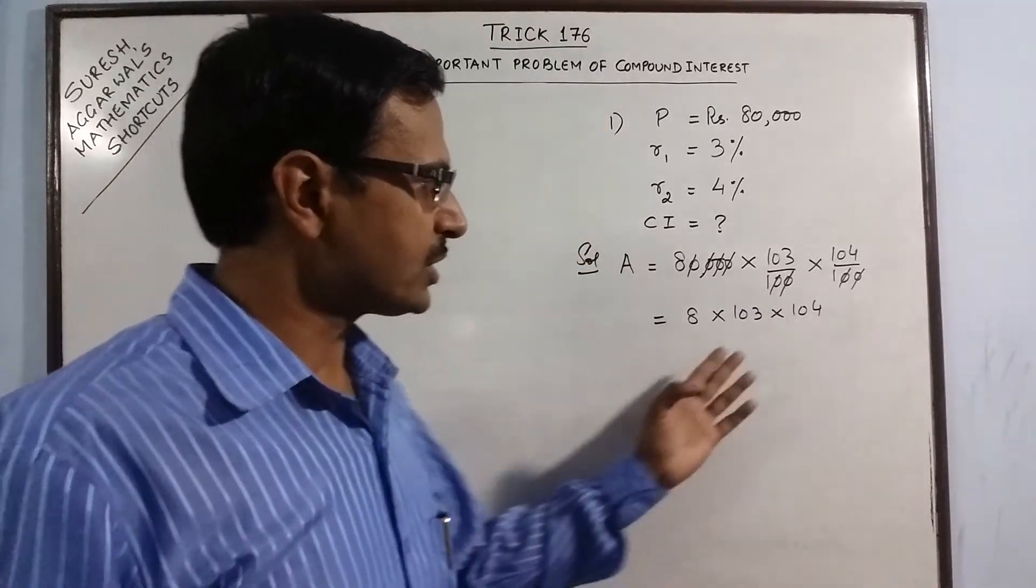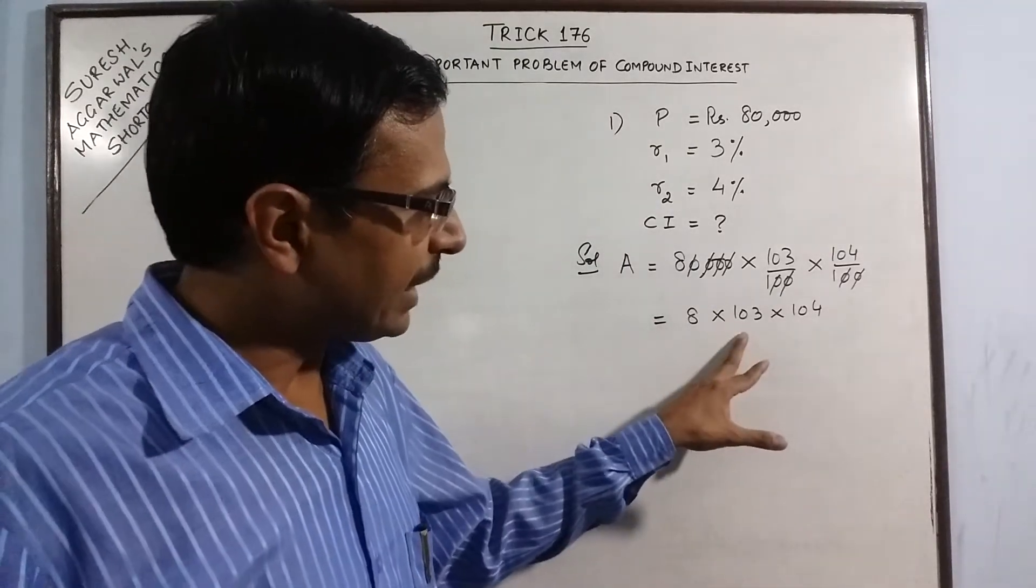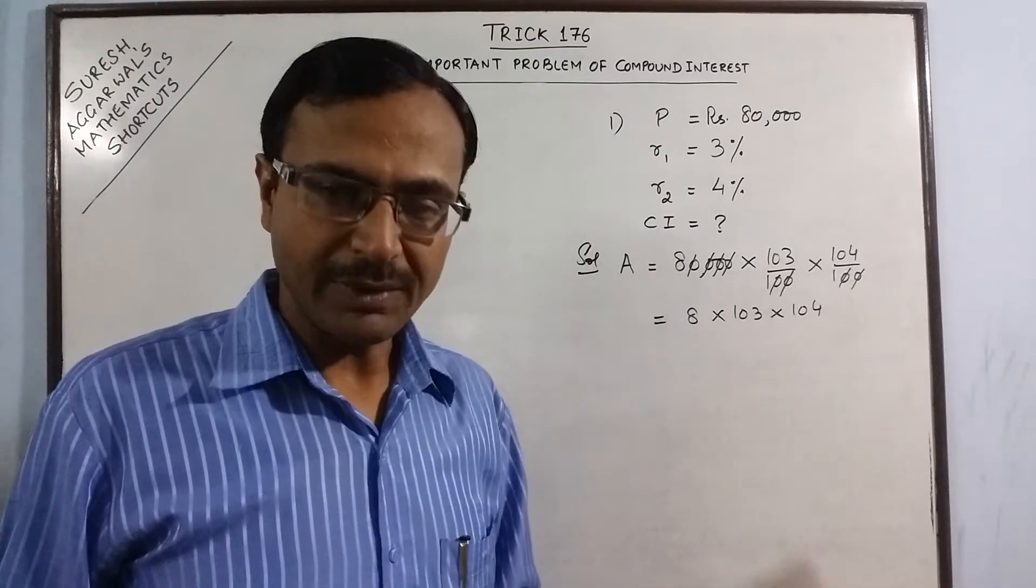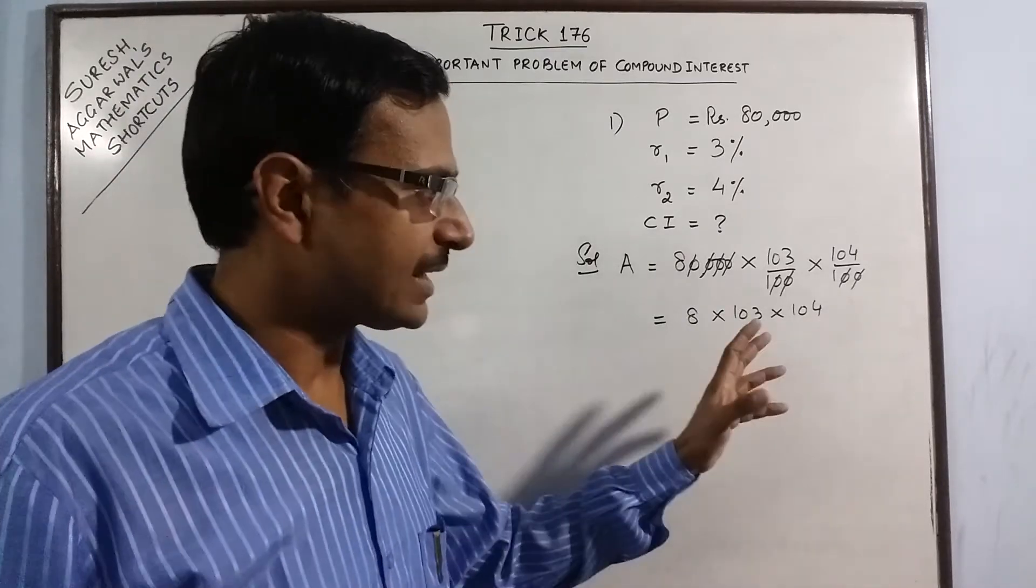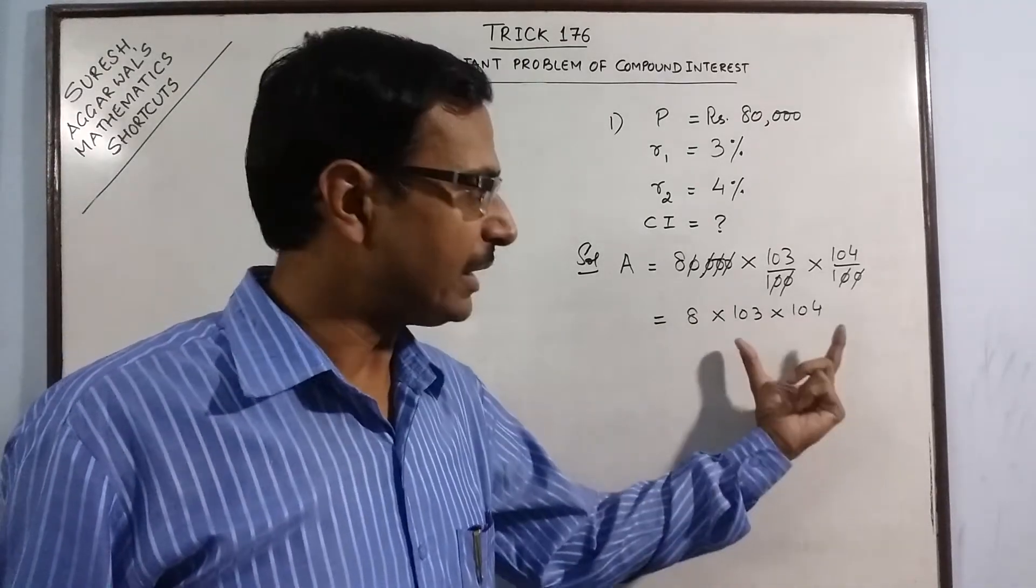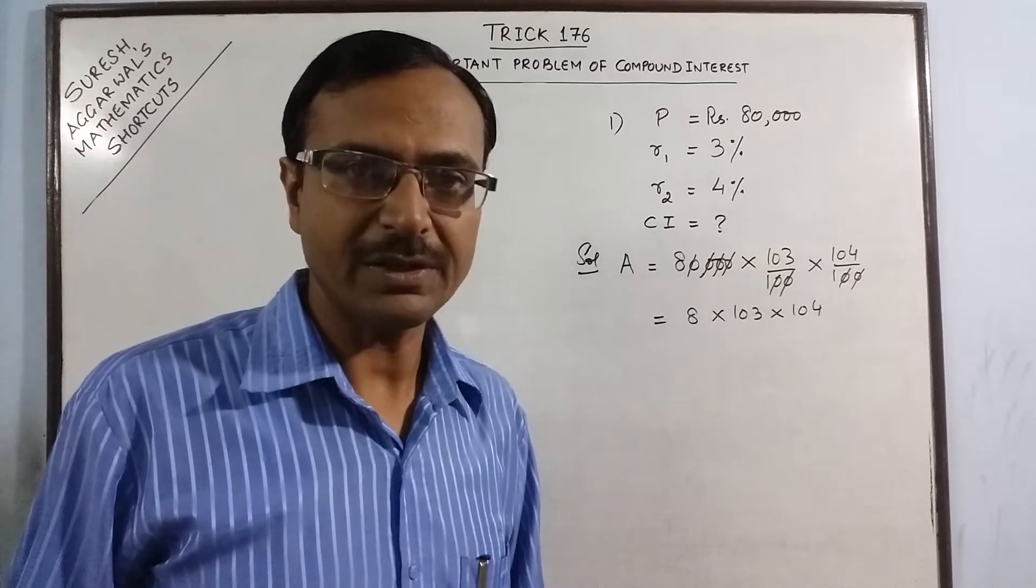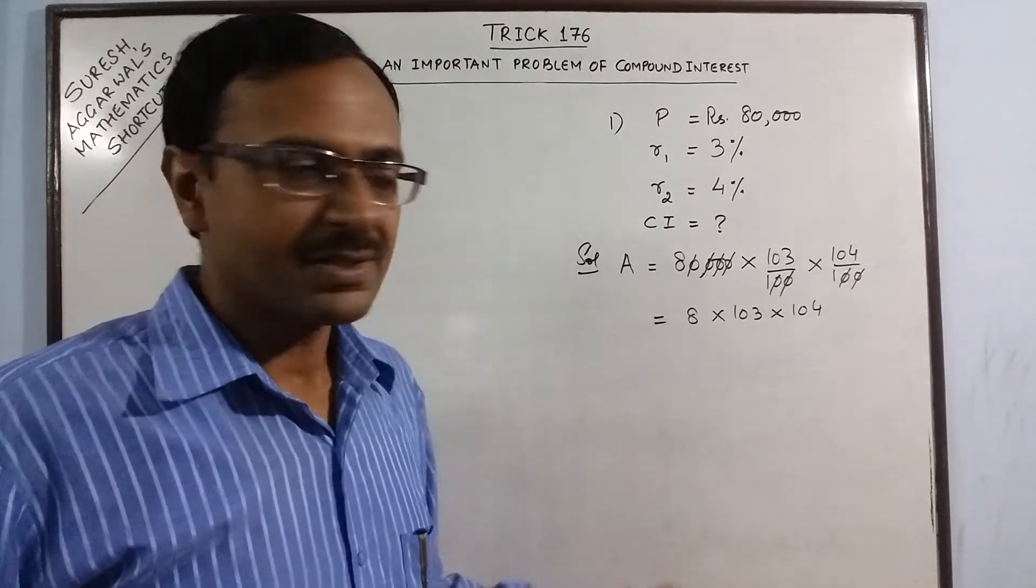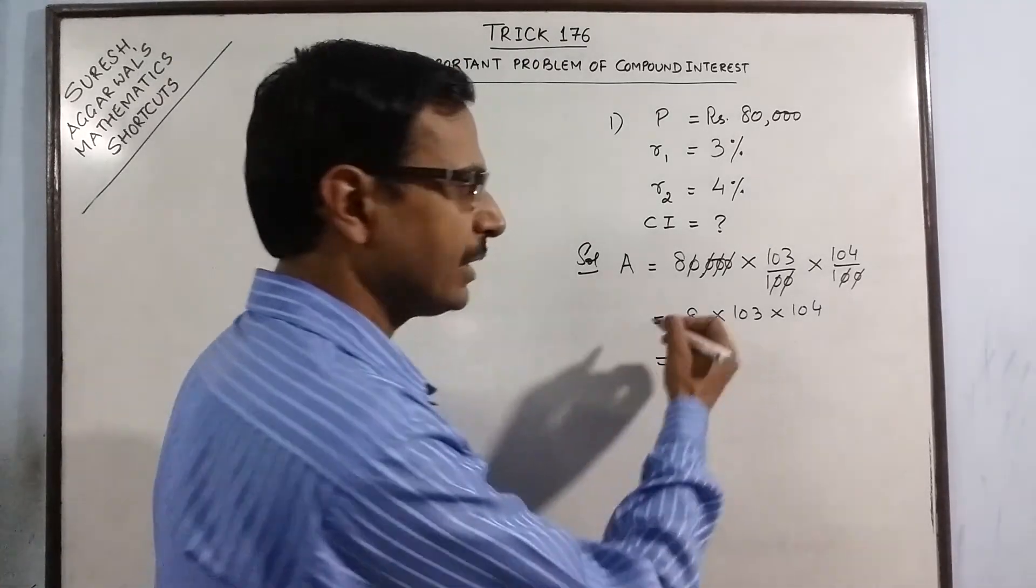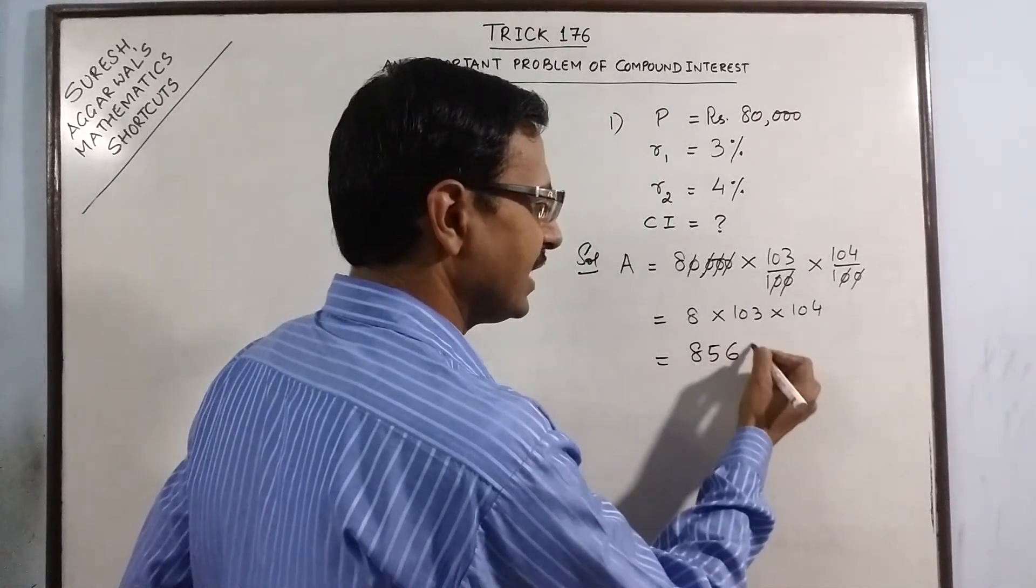I have already posted so many videos on multiplication tricks in which you can multiply numbers close to 100, 1000 in a single step. So if you are aware of those tricks, you can multiply 103 and 104 very easily, otherwise you can use traditional method. For this I have already calculated the product of these 3. This is 85,696.